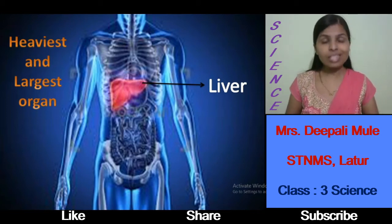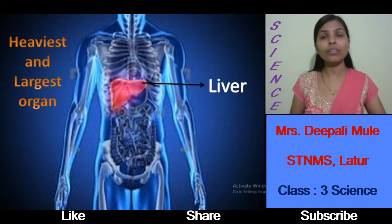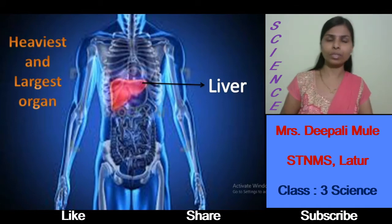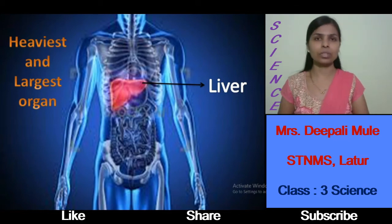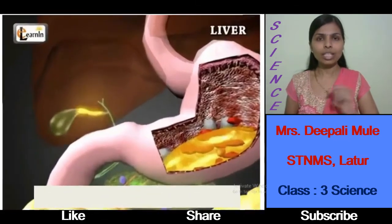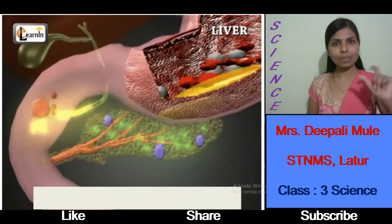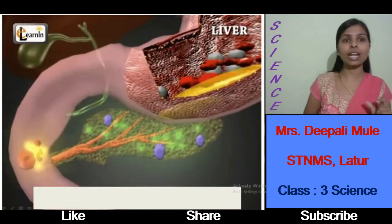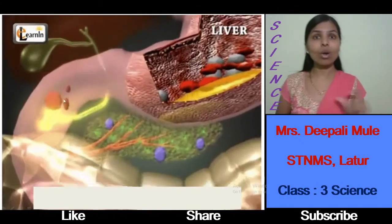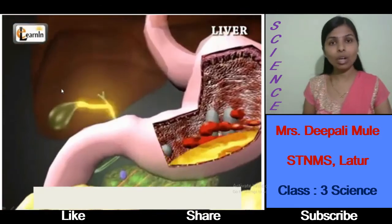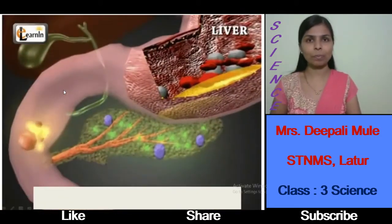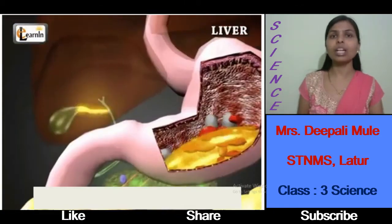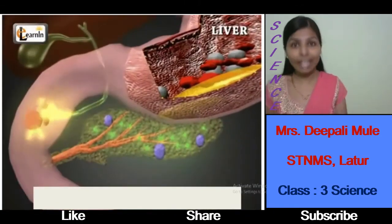If we are not eating for a longer time, the liver produces glucose and provides it to our body so that we get energy. You can see that the liver produces bile juice, and the green color shown here is the gallbladder. We are going to learn all these things in the digestive system. Just remember that the liver produces bile juice and it helps break down food particles into smaller pieces.